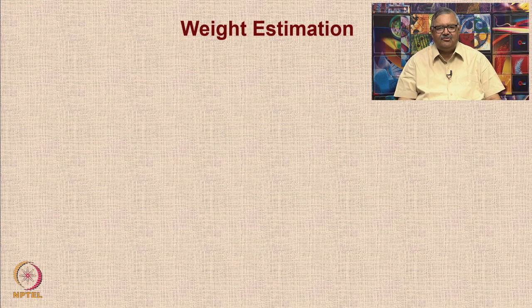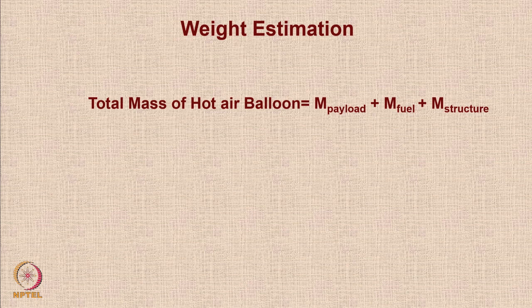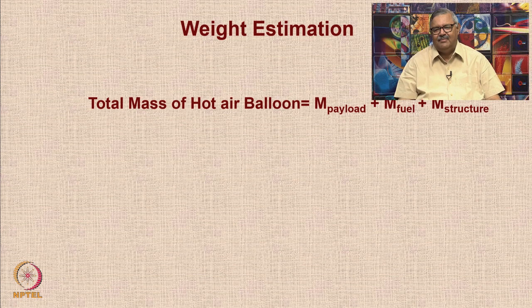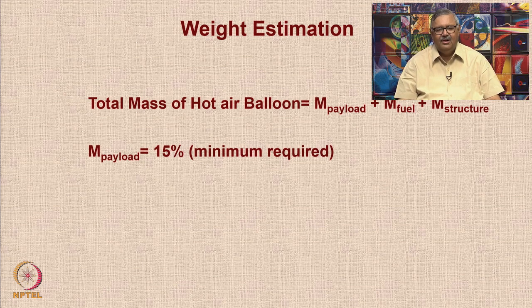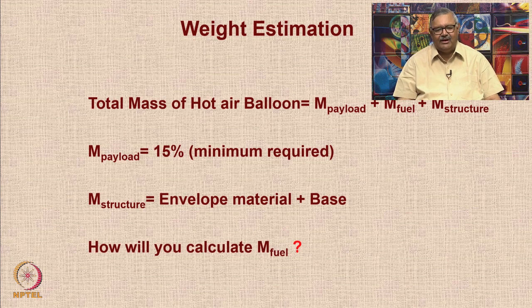For weight estimation, the total mass of the system has three components: mass of the payload, mass of the fuel, and m_structure — the mass of the envelope material and any other structure mounted on it. The payload must be at least 15 percent of the total system mass. The fuel mass depends on your experimental assessment of how much fuel is needed to generate buoyancy within 4 minutes and rise to the ceiling within 2 minutes.